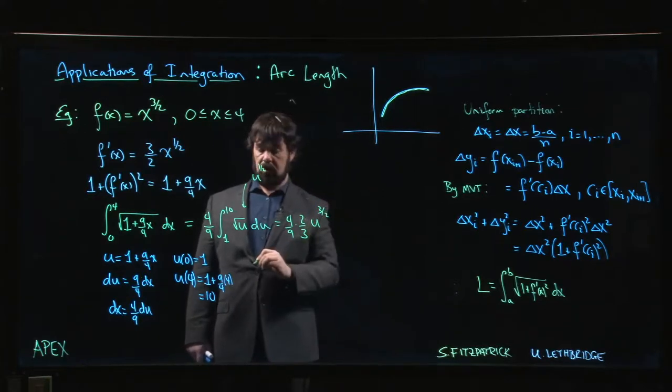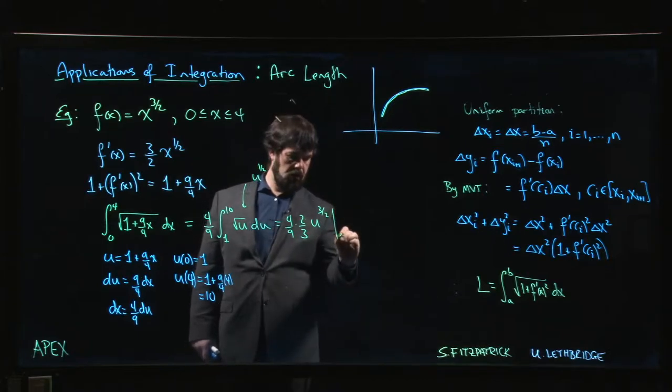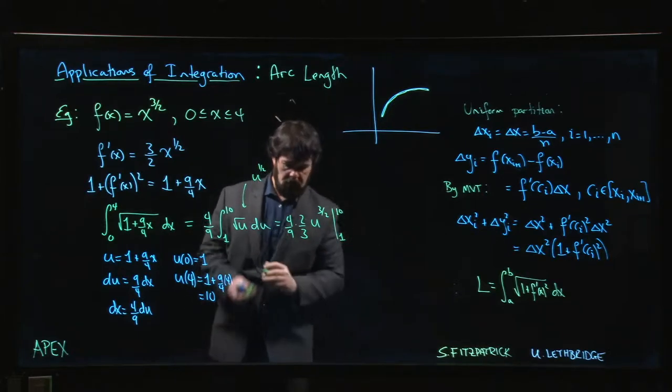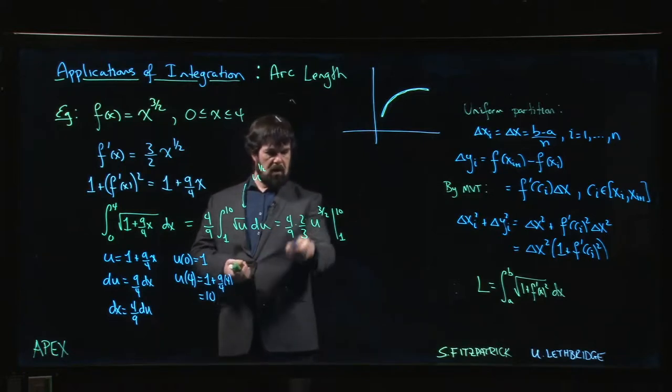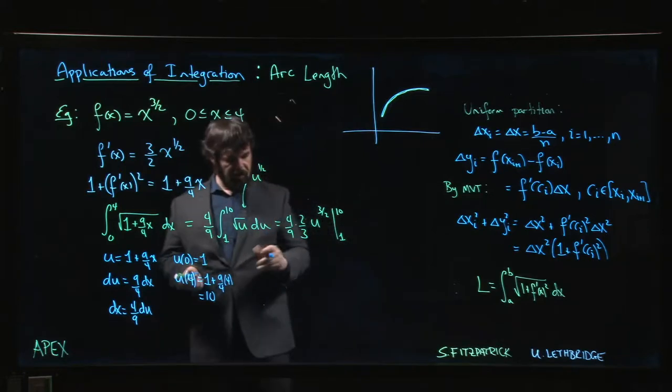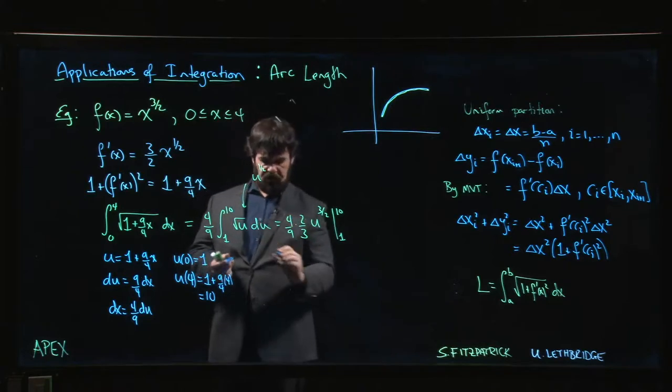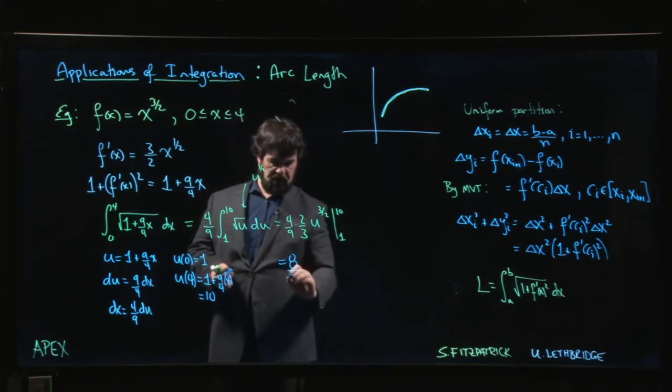We're not so lucky here in the sense that nothing really cancels out in these constants. 2 times 4 is 8, 9 times 3 is 27. And we put in our limits - we have 10 to the 3 over 2 minus 1.